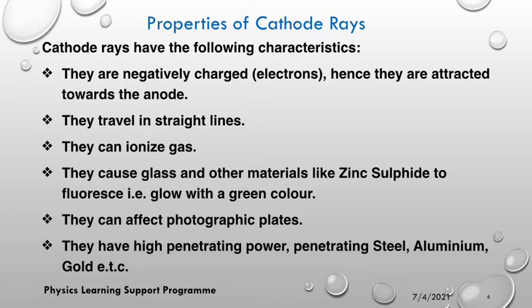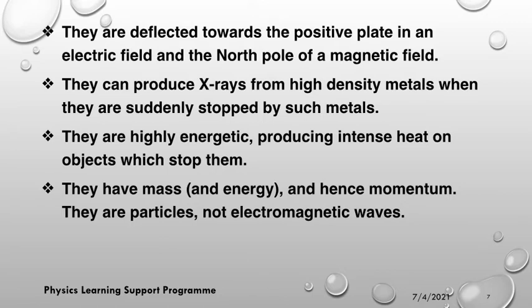Cathode rays can ionize gas. They cause glass and other materials like zinc sulfide to fluoresce — that means they shine brightly, glowing with a green color. They can affect photographic plates. They have high penetrating power — they can penetrate steel, aluminum, gold, and different metals. They are deflected towards a positive plate in an electric field and towards the north pole of a magnetic field. They can produce X-rays from high-density metals when they are suddenly stopped by such metals.